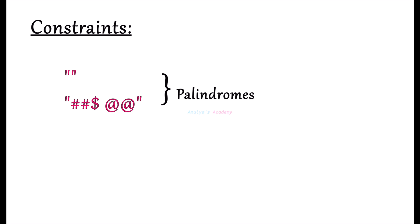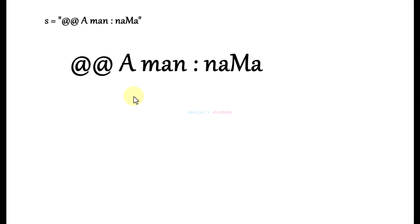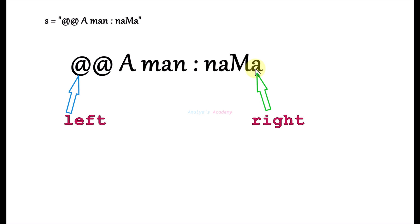Next, let's see how to write the program with an example. We will use a two-pointer approach. We take two pointers, left and right. The left pointer points to the character at the zeroth index and the right pointer points to the character at the last index. First, check the character at the left pointer — if it is not an alphanumeric character, increment the pointer and skip it.